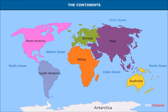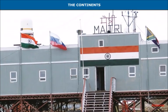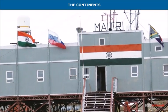Antarctica is the southernmost continent. The South Pole lies at the center of the continent of Antarctica, and it remains covered by deep snow throughout the year. India has set up two research centers here, which are Maitri and Dakshin Gangotri.